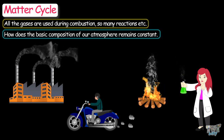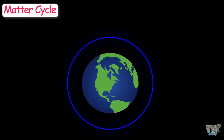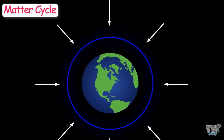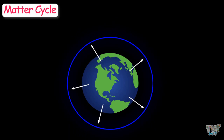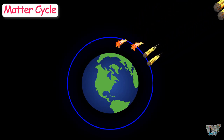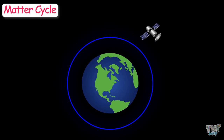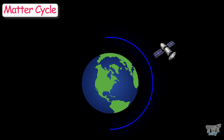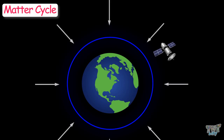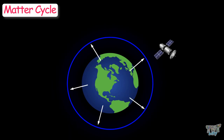Our Earth is a closed system. That is, nothing can enter or leave the Earth or its atmosphere, unless some unusual thing happens — like the entrance of a meteorite, or the launching of satellites. Otherwise, the Earth is a closed system. Nothing enters or leaves the Earth's atmosphere.